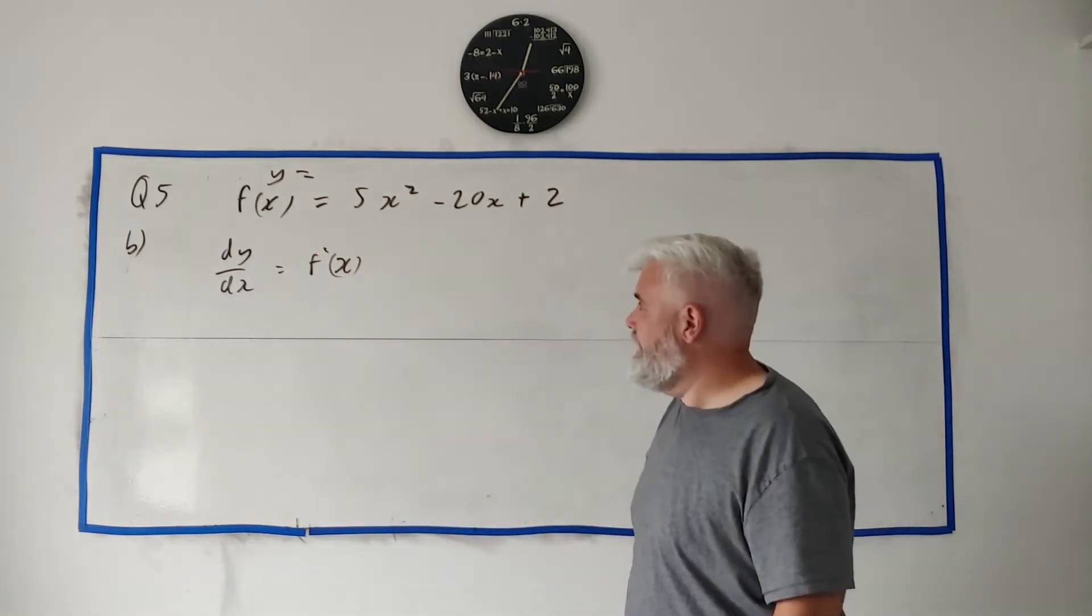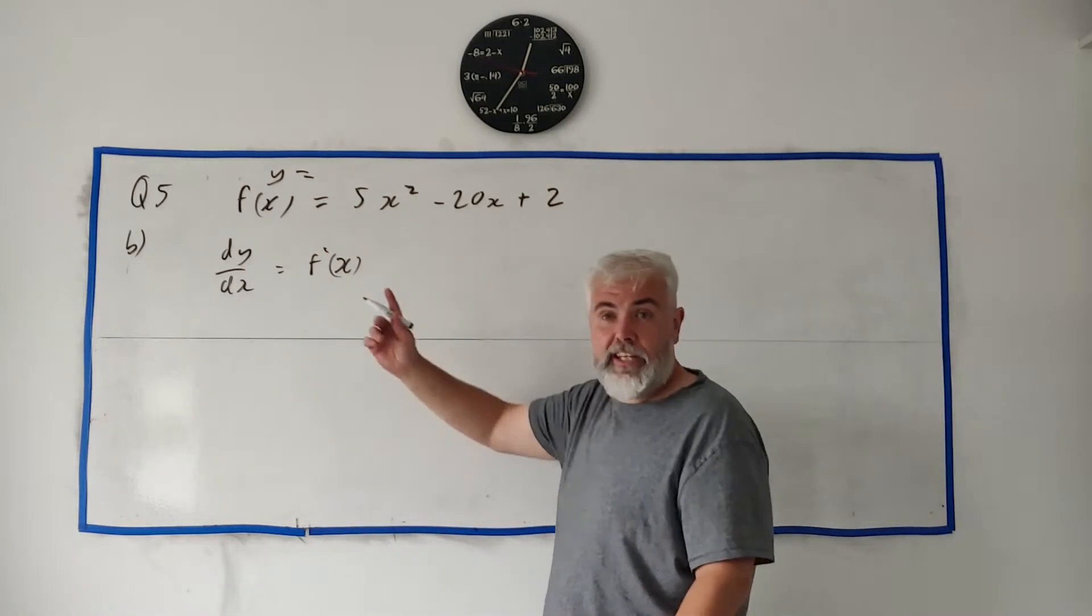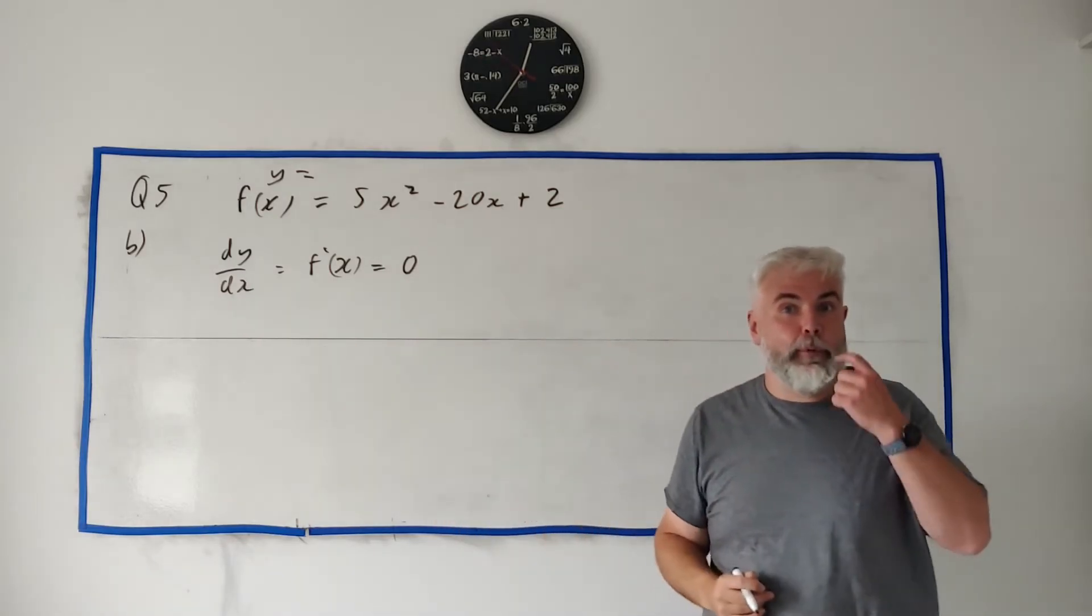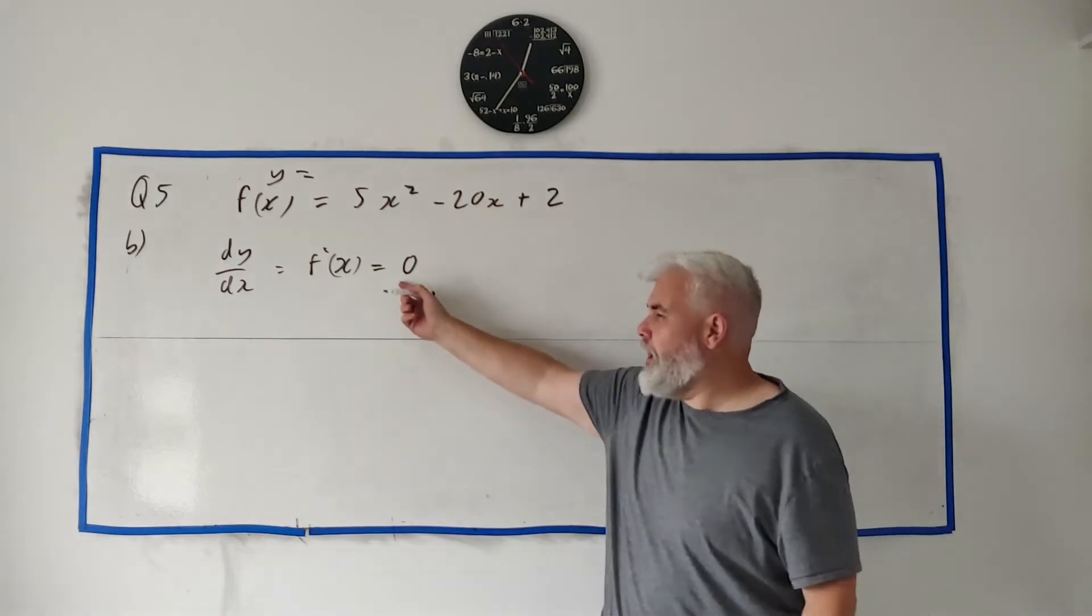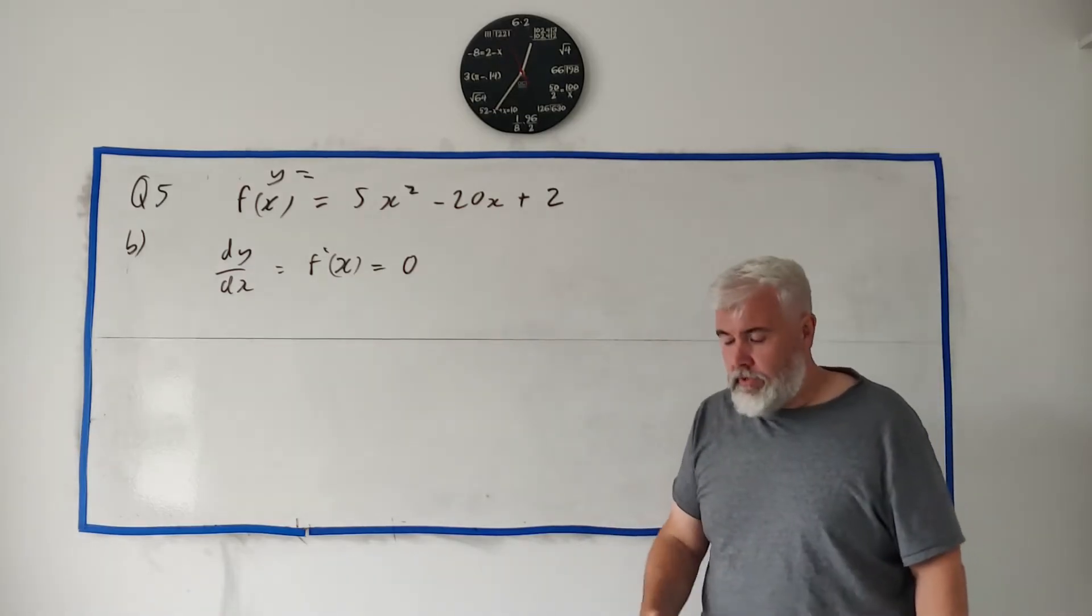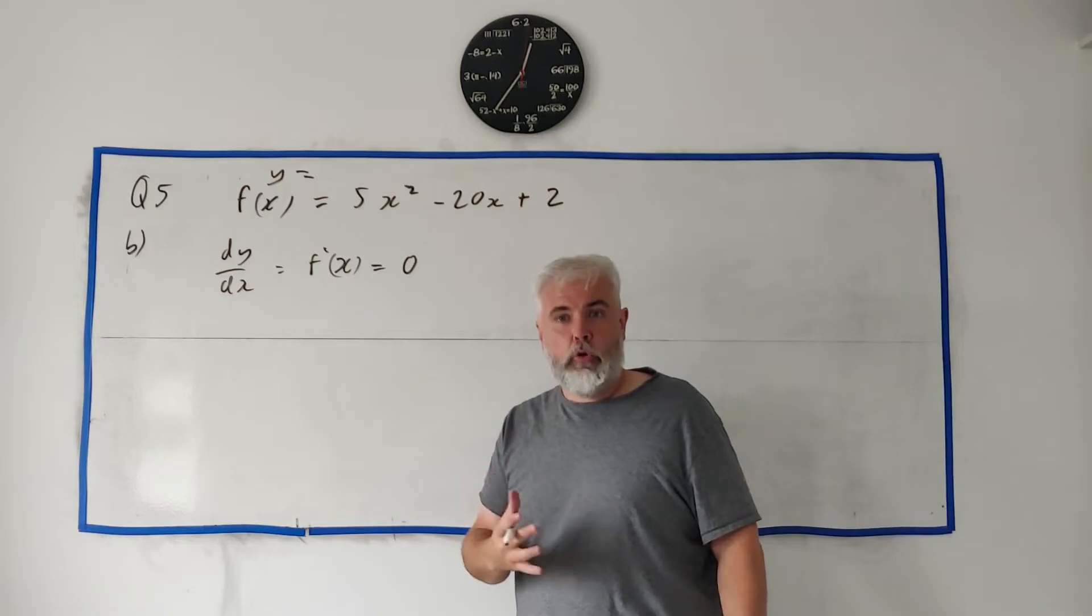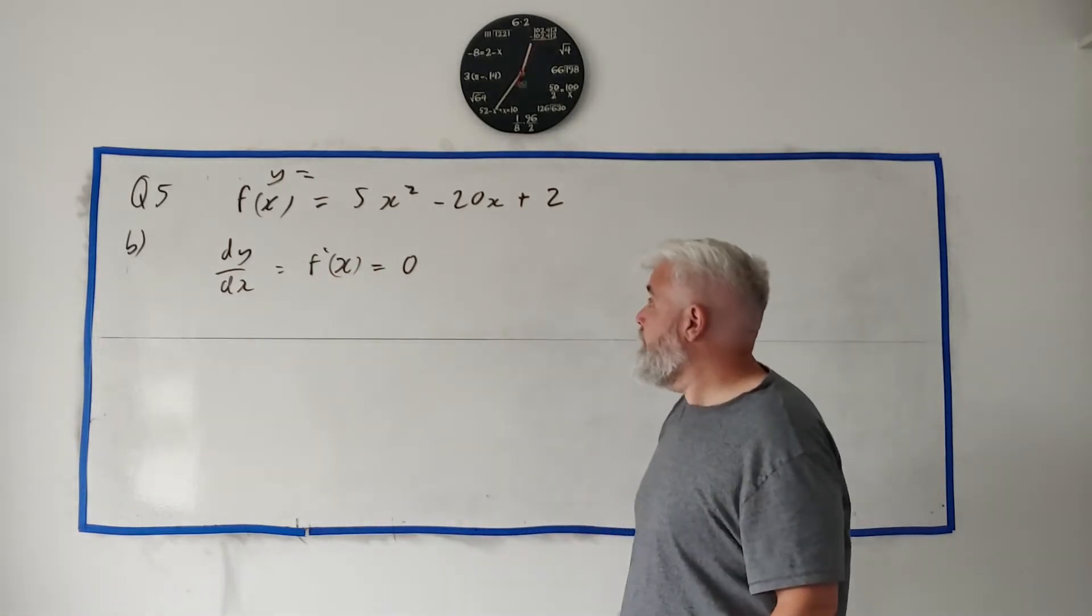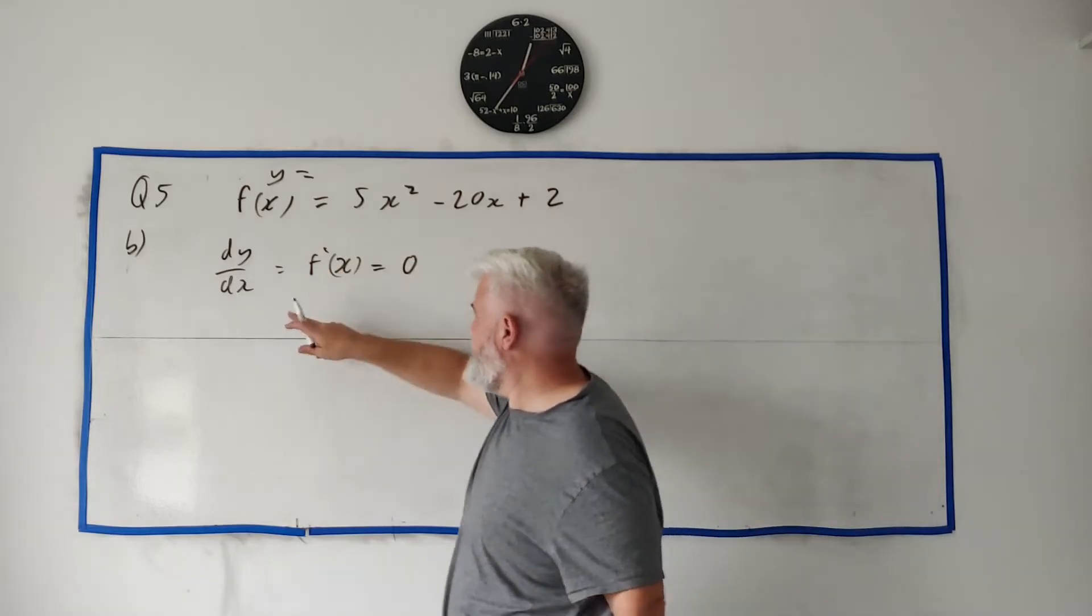Either way, in this case they will equal zero at the minimum. So that's, you're getting a lot of marks for writing equal zero here, because you need to remember that local minimum happens when the derivative equals zero. So let's find the derivative.